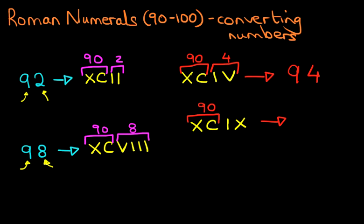Now the second part, we've got 1 before the X. And that means 1 before 10. So this number is 9. So therefore, XCIX is 99.